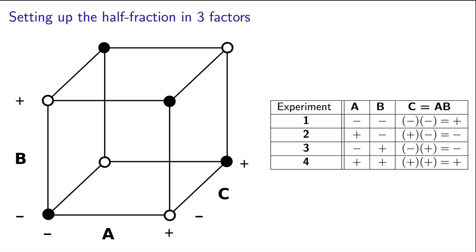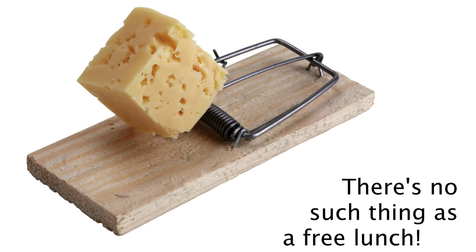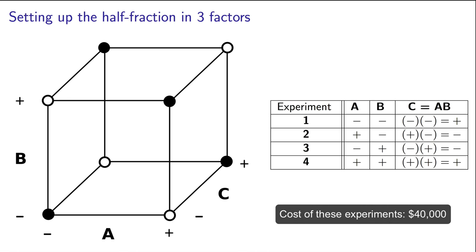In the next video, I'm going to show you where I got that rule that C should equal A times B. So let's understand the trade-off here. If we do half the amount of experiments, we have to accept that we get less information from the system. I guess you can say there's no such thing as a free lunch. You can't get something for nothing. The question is, what is the penalty for doing fewer experiments? What is this free lunch costing me?